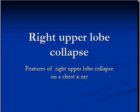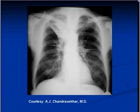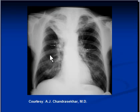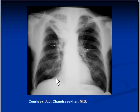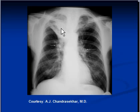Features of right upper lobe collapse on chest X-ray. On the PA view, there is a triangular opacity in the right apex. The right lung is a bit smaller than the left lung. Arrows indicate that the right hilum is slightly higher than the left hilum. The opacity does not show any air bronchogram.